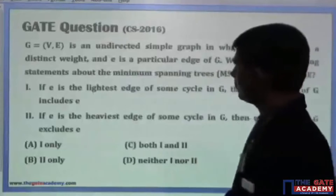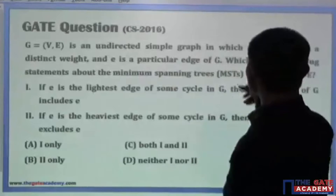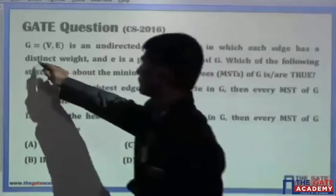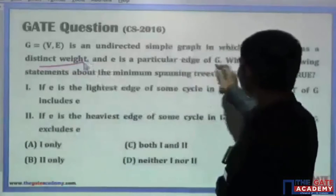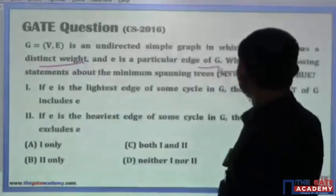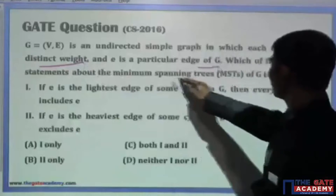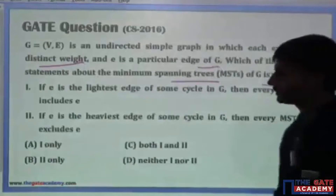Let's use a graph G, which is an undirected simple graph in which each edge has a distinct weight and E is a particular edge of G. Which of the following statements about the minimum spanning tree of G are true?